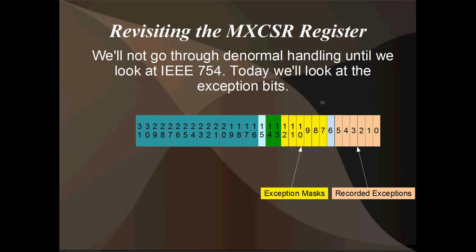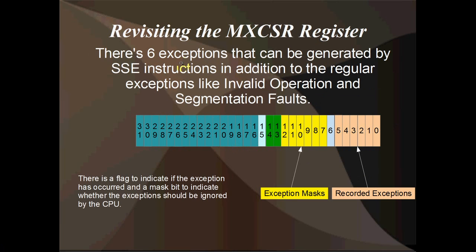So we're not talking about denormals — we're talking about exceptions. There are 6 exceptions that can be generated by SSE instructions when doing floating point, and this is in addition to regular exceptions like invalid operations or segmentation faults. If you try to write to memory that some other program owns, you're going to get a segmentation fault, and that's got nothing to do with the MXCSR register — that's not going to be recorded here.